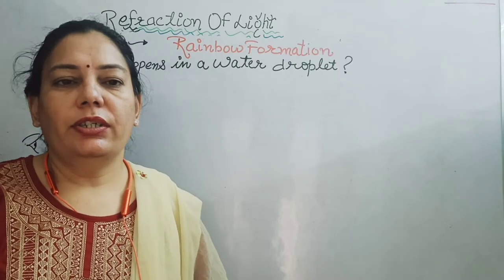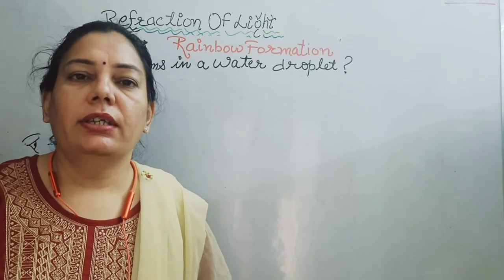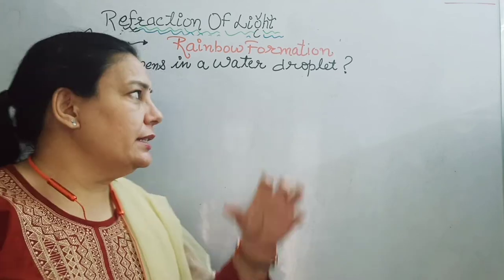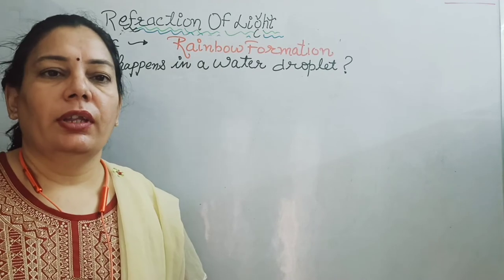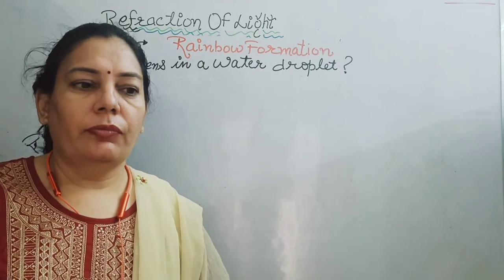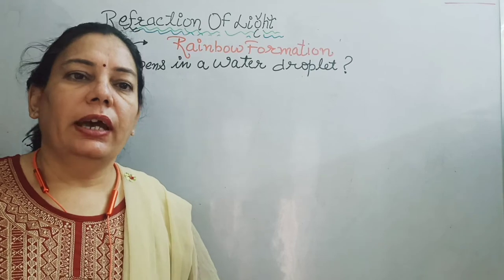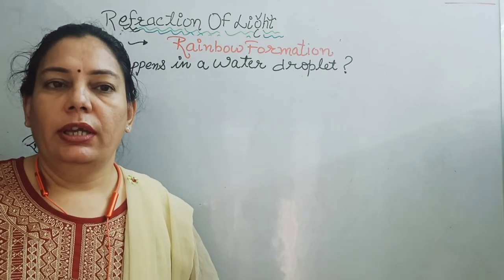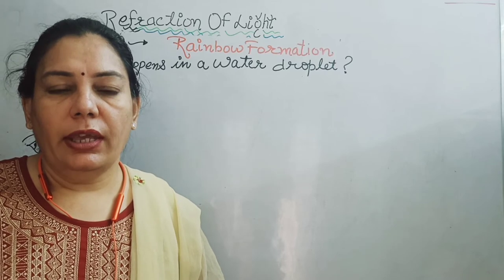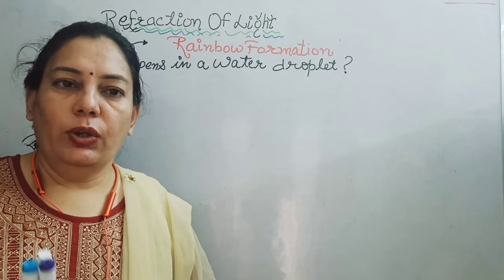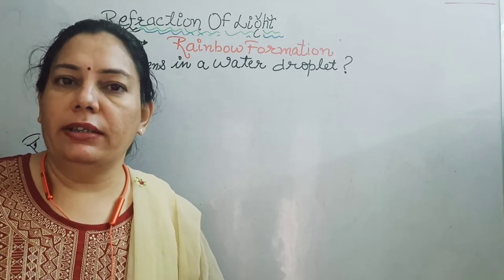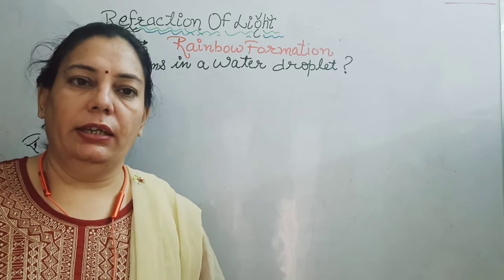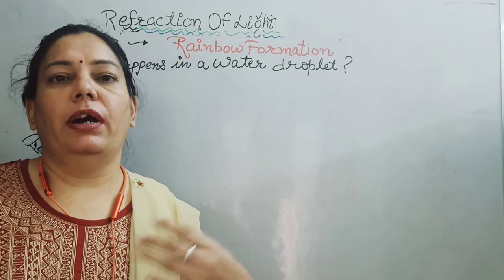Today we are going to discuss nature's most beautiful display, that is rainbow formation. Actually, this is not a real thing — we cannot touch a rainbow, and rainbow does not exist in a particular place. Then how is it formed and why is it formed? In science, if we want to understand any concept, we should keep these two points in mind: how it happens and why it happens.